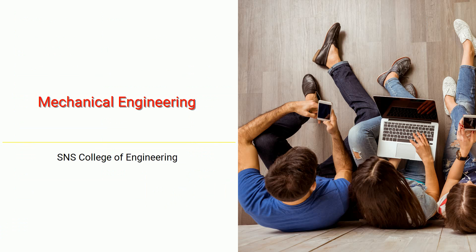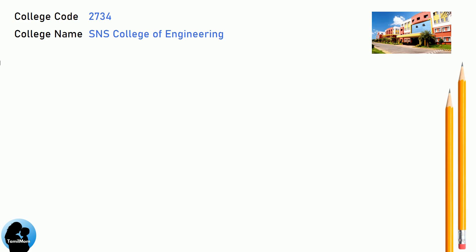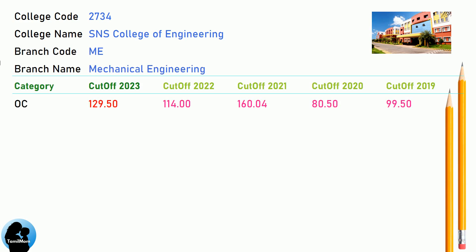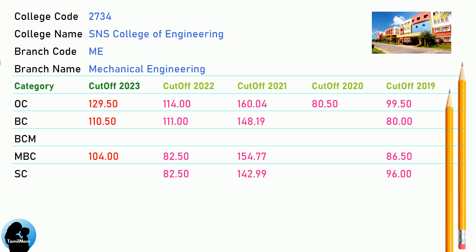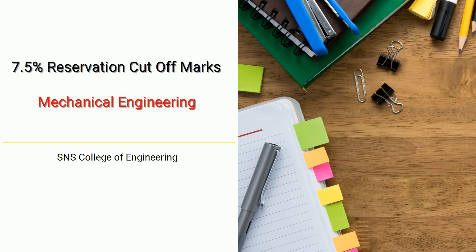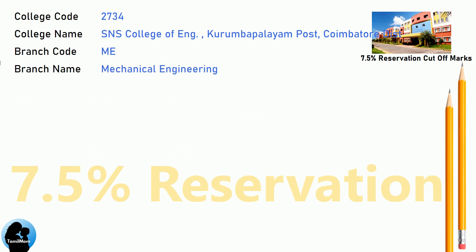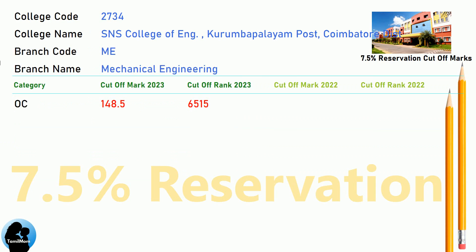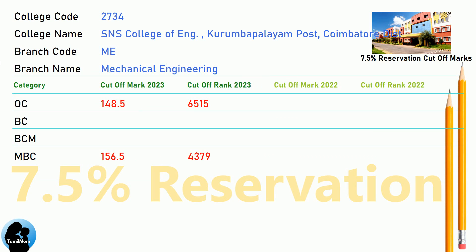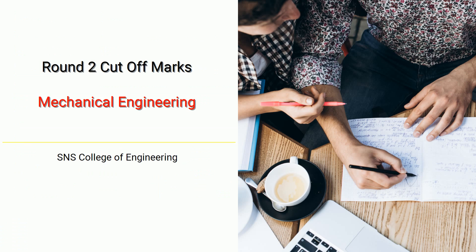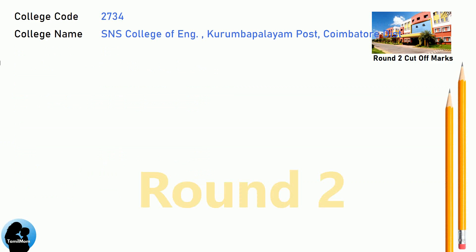DNA Cut-off for ASNS College of Engineering in Mechanical Engineering. DNA 7.5 Reservation Cut-Off for ASNS College of Engineering in Mechanical Engineering. DNA Round 1 Cut-Off for ASNS College of Engineering in Mechanical Engineering.